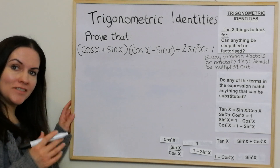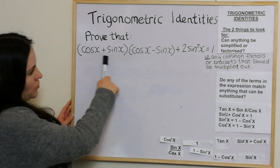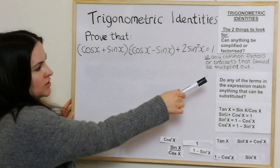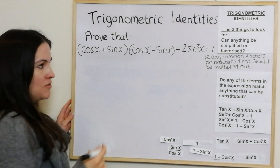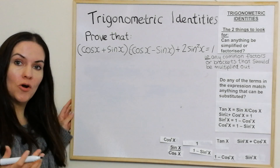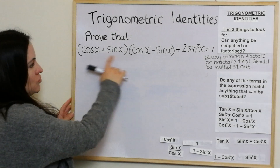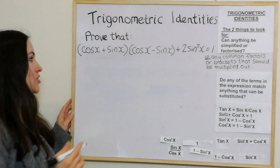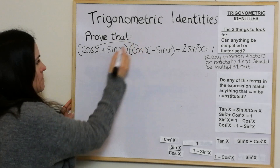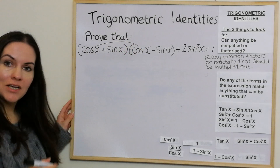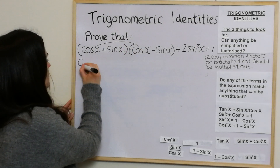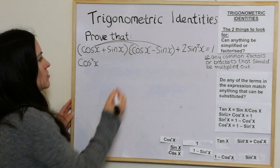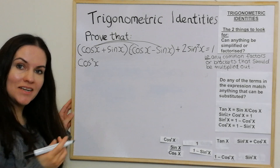In our final example, this one is a bit more tricky — it's quite long on the left-hand side and just equals 1 on the other side. What I'm looking for first is whether anything can be simplified, factorised, or whether brackets can be multiplied out. On this occasion we do have brackets that can be multiplied out, so we'll do that first. Multiplying the two brackets: we get cos²x, then minus sin x · cos x.